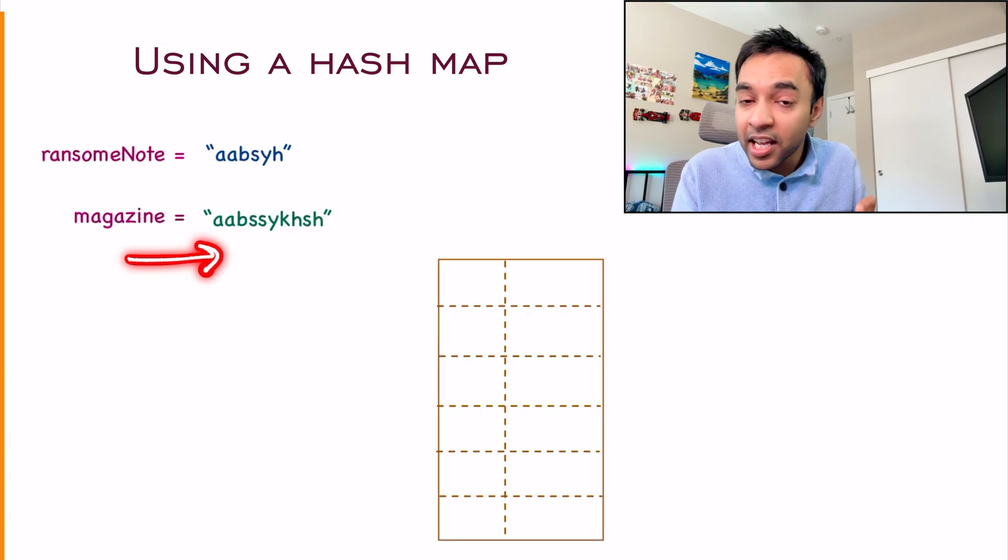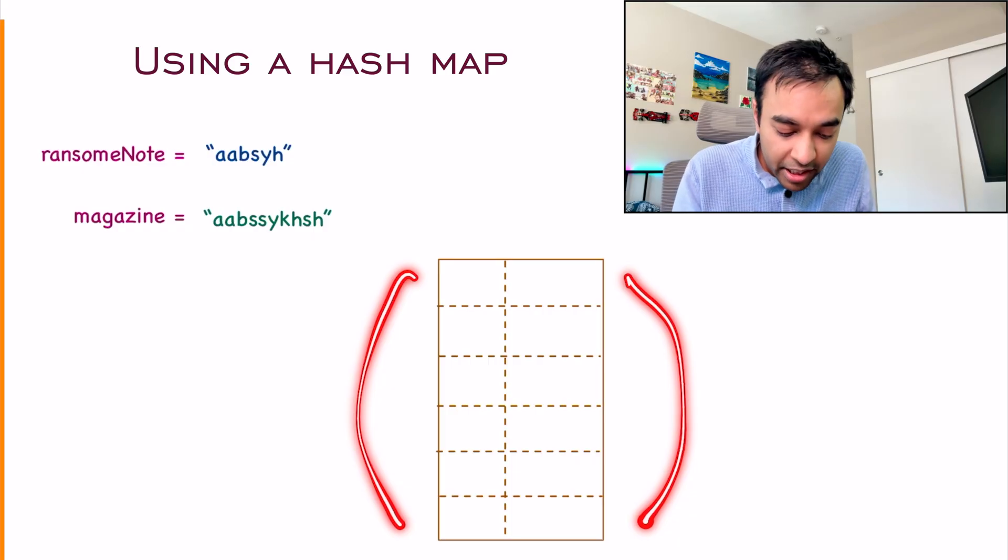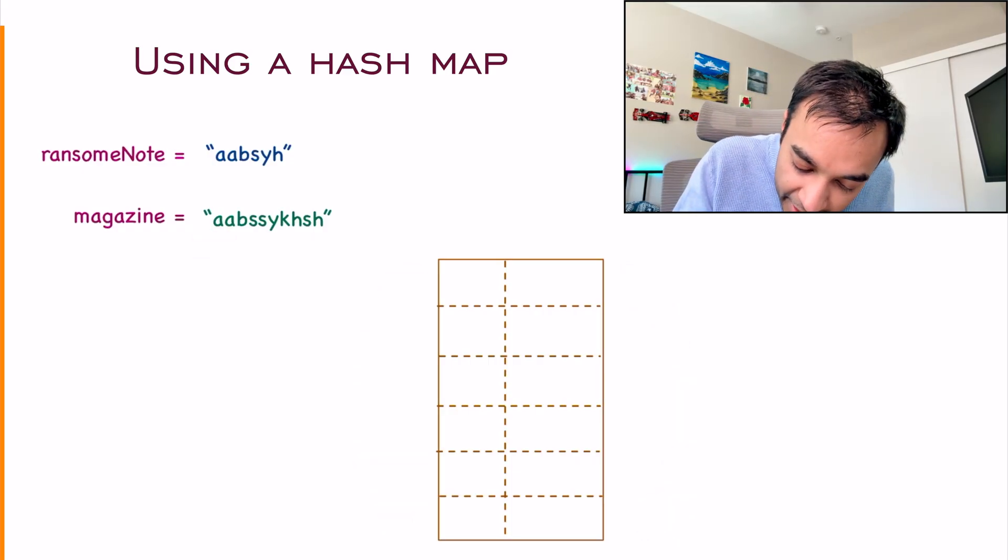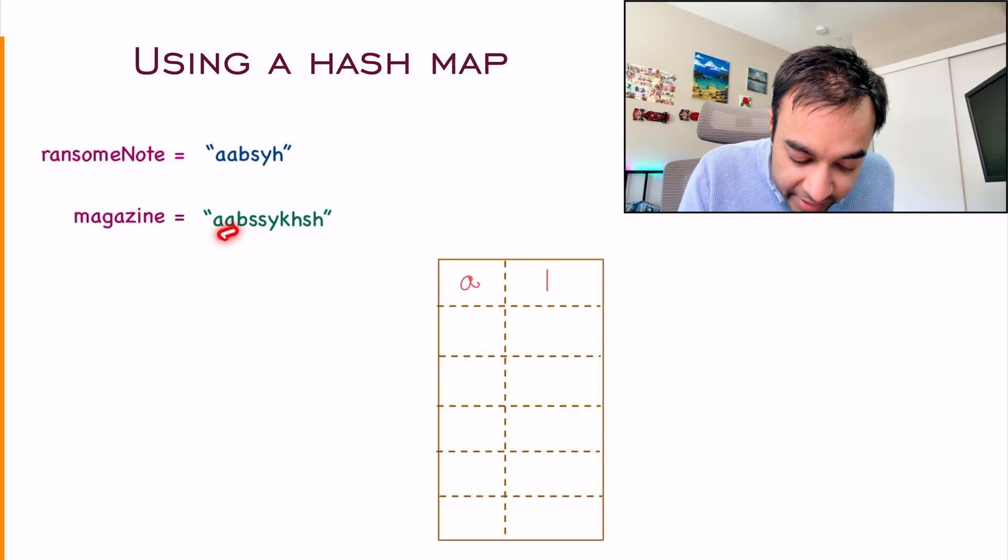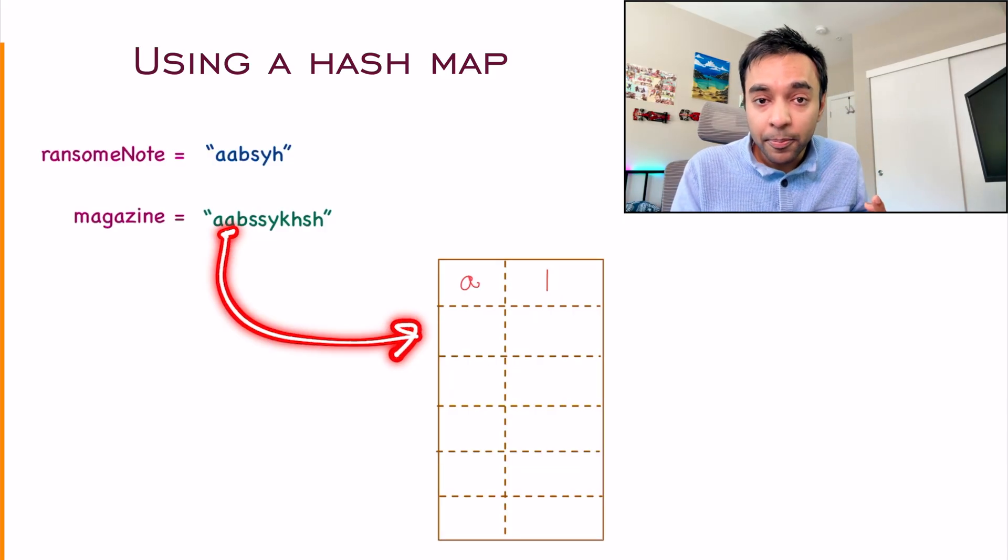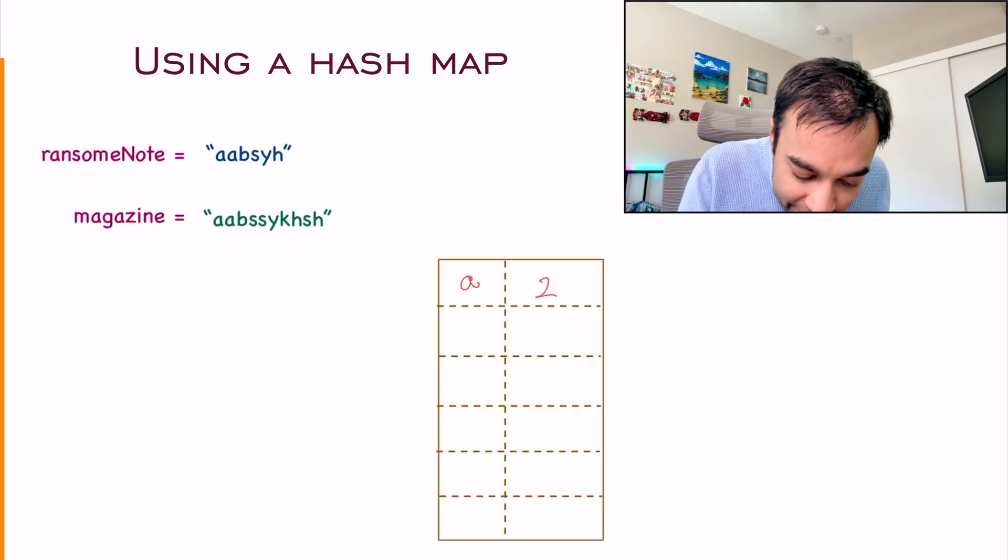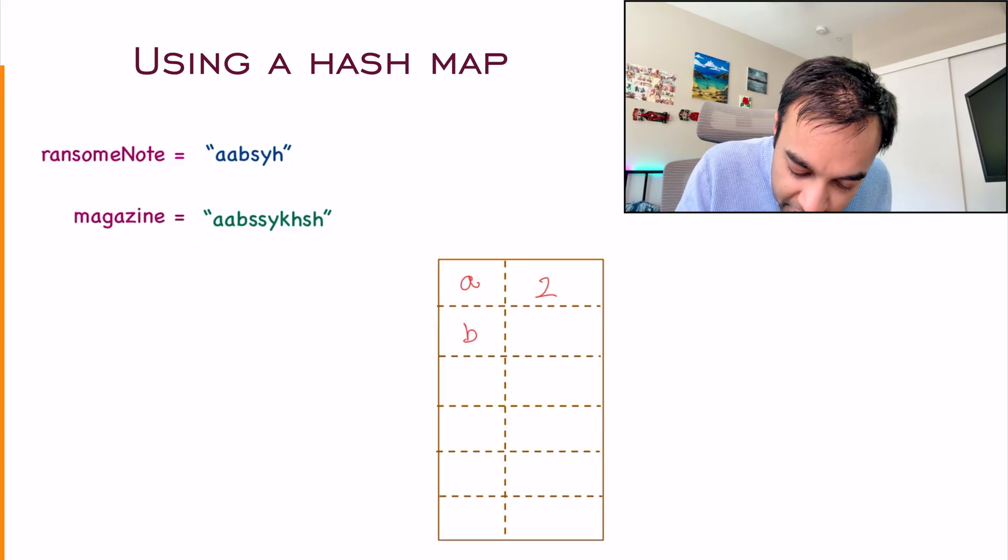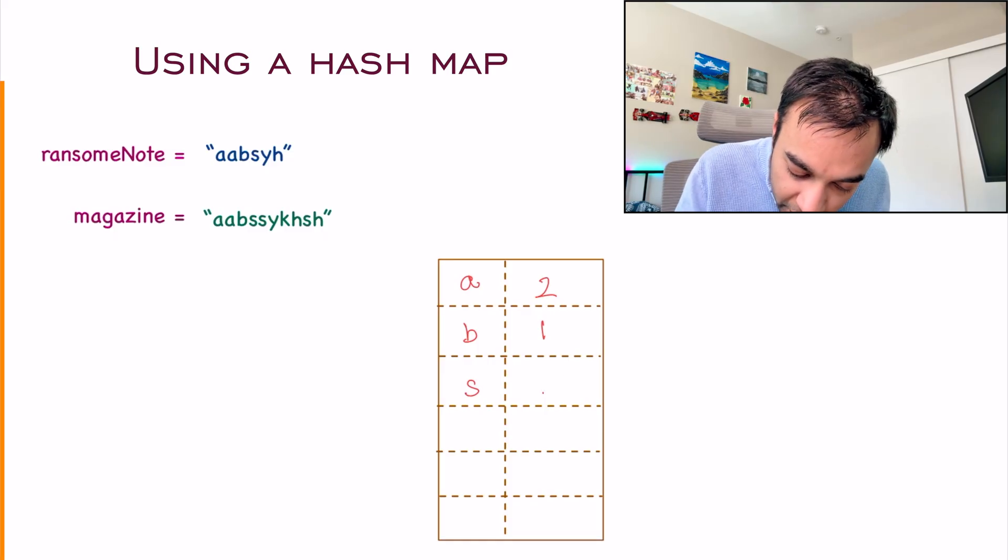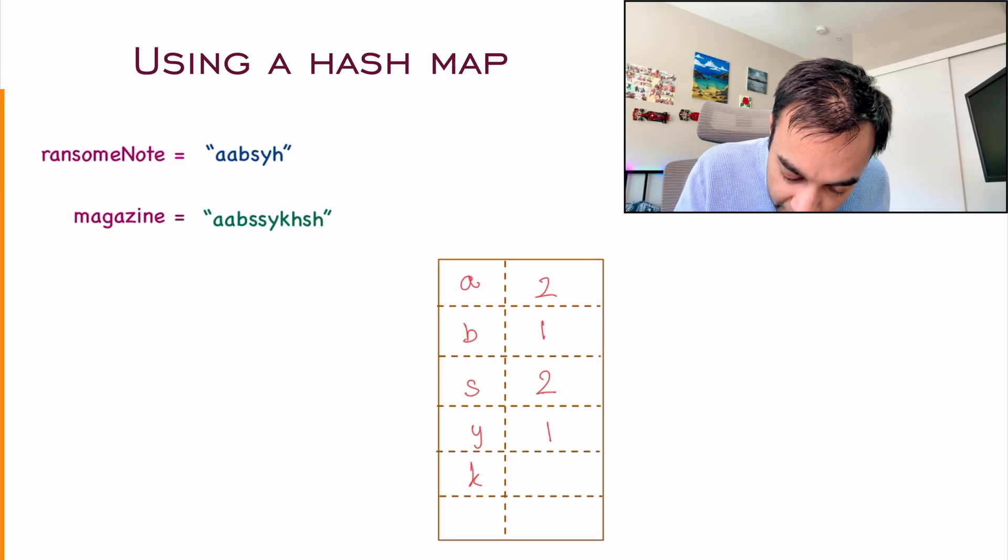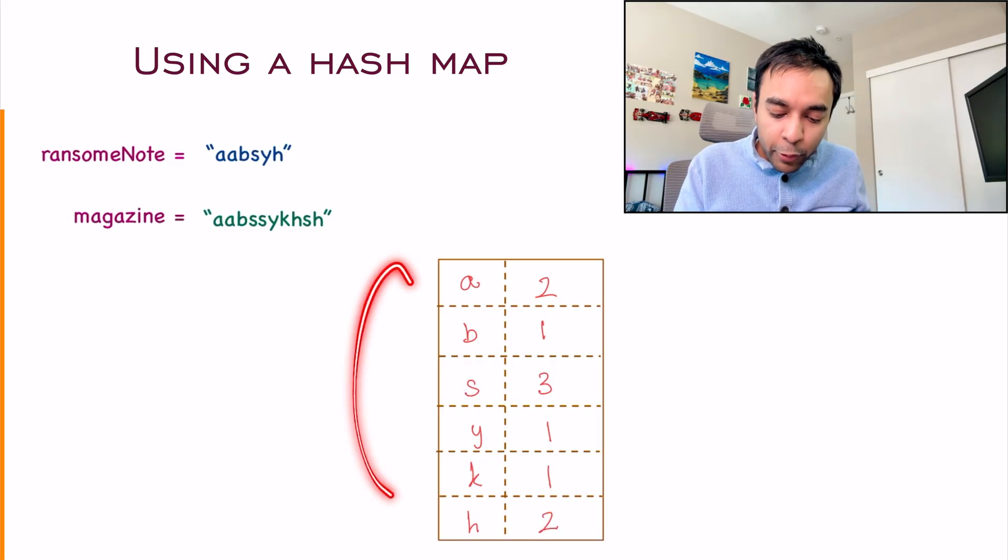And the idea is very similar. You initialize your hash map and it is currently empty. There are no characters available. Once again, you will iterate over your magazine string. For every character that you get, first you check if it's available in my hash map. A is not available. So I add A in my hash map and put its frequency to be 1. Move on to the next character. It is A again. Look up in your hash map. It is available. So this time you increment its frequency. So A now becomes 2. Similarly, you go on. Next you get a B, so this gets added. Next, you have an S, so this gets added. You have an S again, so you increment the frequency. Then you have a Y. Then you have a K. Then you have an H. Then you have an S again. And then you have an H again.